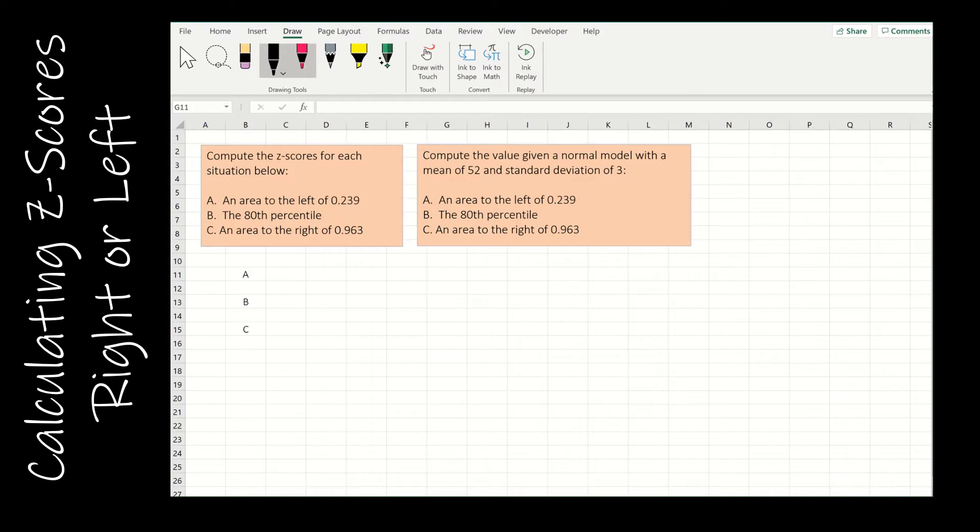Let's take a look at a couple of questions. We're going to focus on to the left and to the right. For the first set of questions, the instructions ask us to find a z-score for a certain situation. And the second set of questions ask us to find a value for those same three situations. So instead of doing all three of the first set first, we're actually going to do the A's together, the B's together, the C's together.